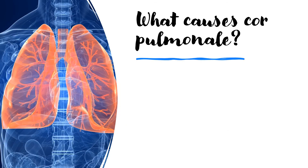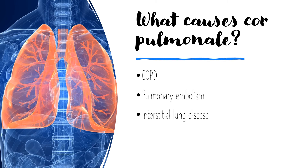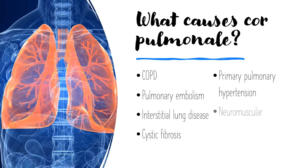There are quite a few things that can cause Cor Pulmonale. COPD is the most common. It could also be caused by pulmonary embolism, interstitial lung disease, cystic fibrosis, primary pulmonary hypertension, neuromuscular diseases like myasthenia gravis and motor neurone disease, and skeletal diseases like scoliosis.